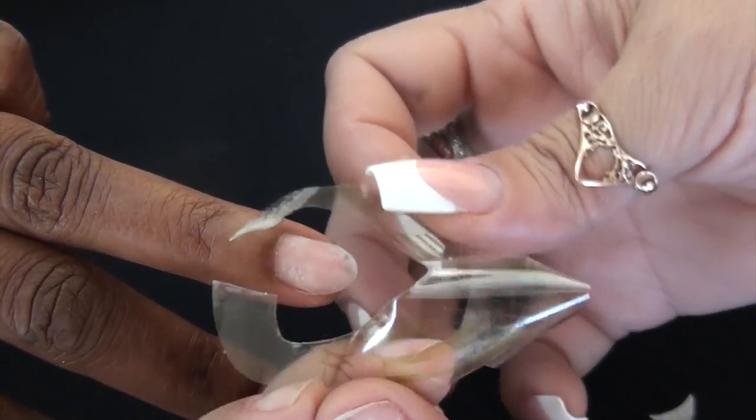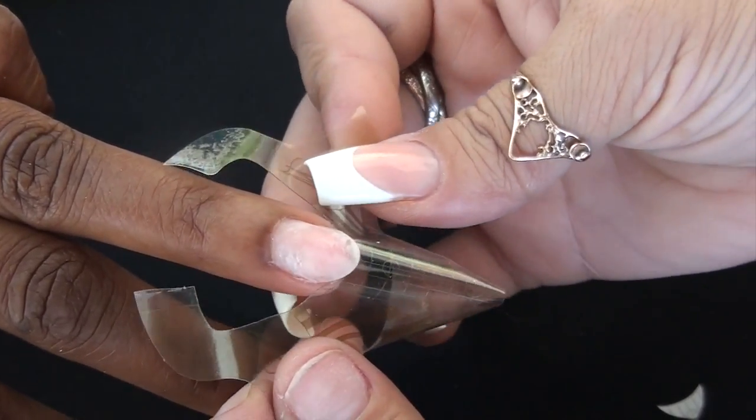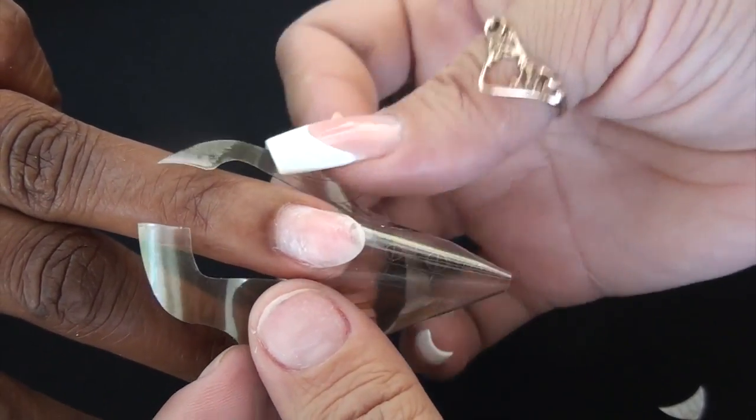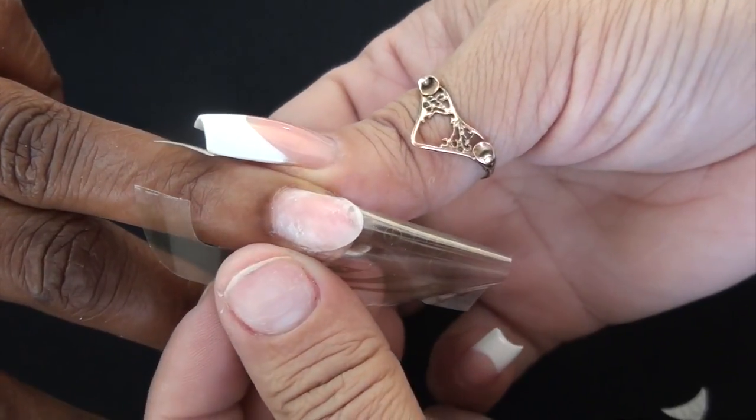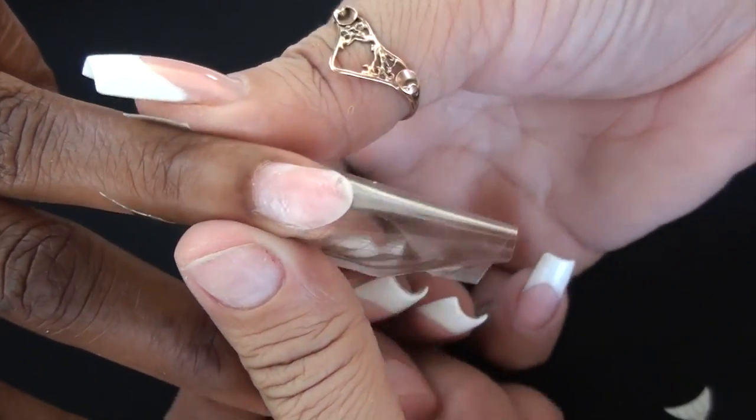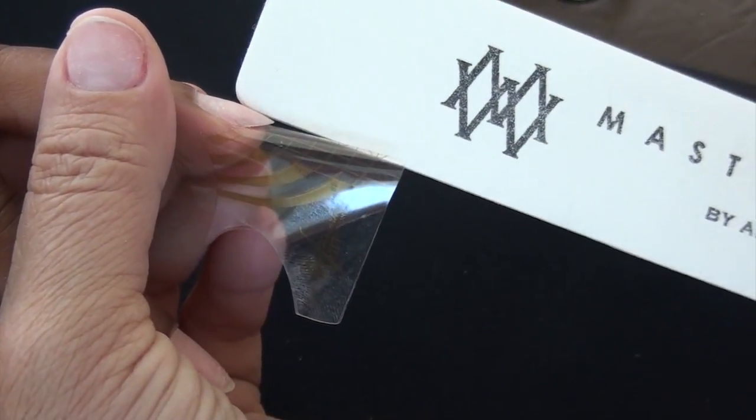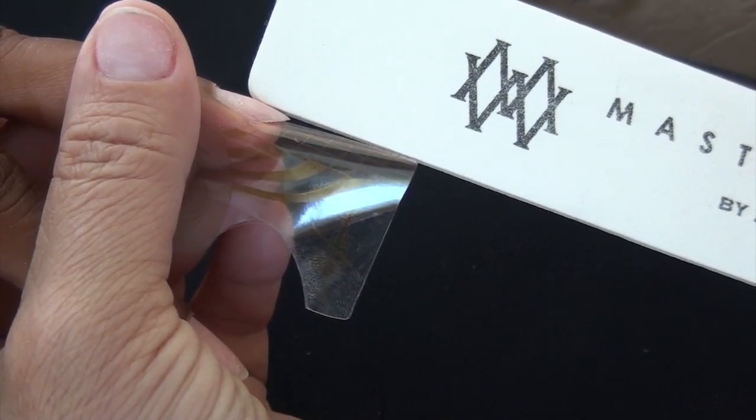Coming in nice and gentle, make sure you work those edges of the form gently underneath the little bit of free edge that you have left and tack into place. Use your file just to measure and see exactly how straight this form has happened.